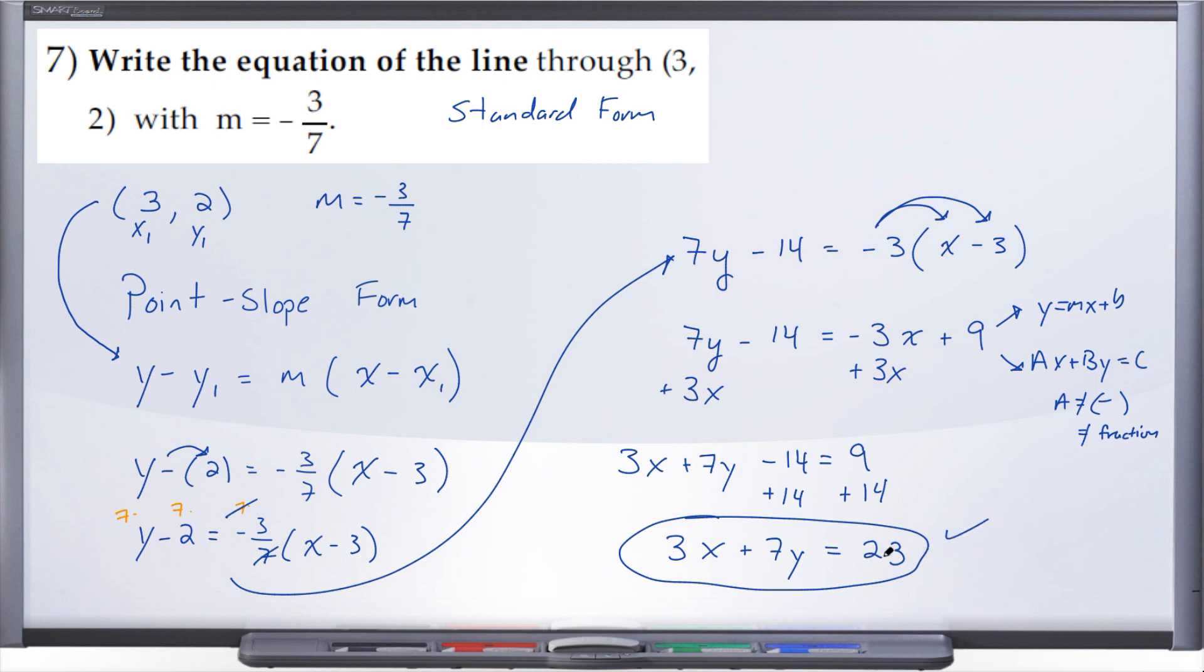And there we have it. So we wrote the equation of the line through this point 3 comma 2 with the slope negative 3/7. We use the point slope form, went through, cleared our fraction, and once we cleared the fraction we were able to distribute our slope through the set of parentheses. And once we did that we were able then to take this equation one of two ways, either y equals mx plus b or we can take it to the standard form way, which is the way that we ended up taking it, and we arrived at our answer 3x plus 7y equals 23.